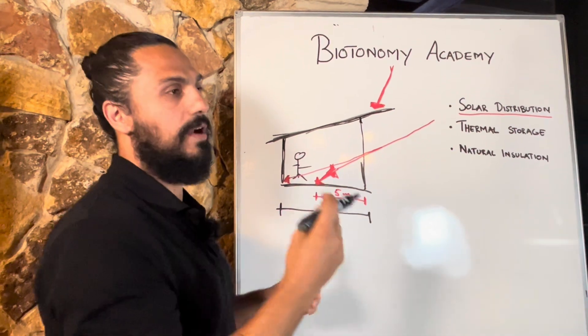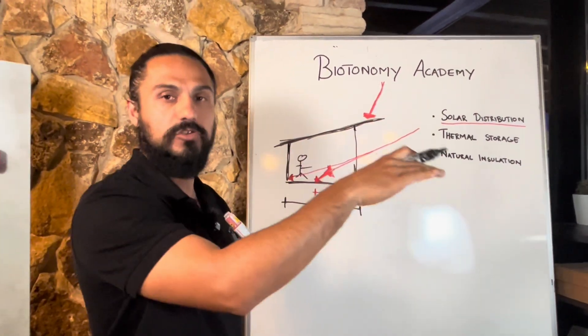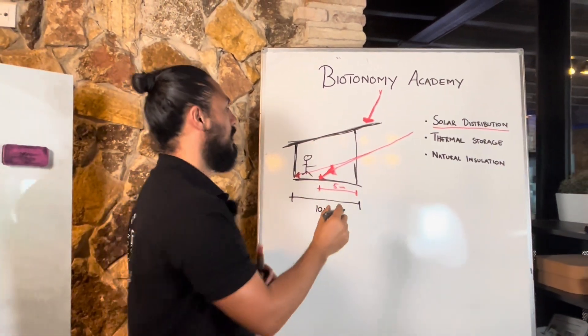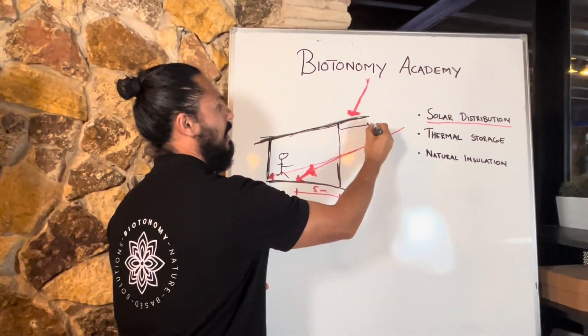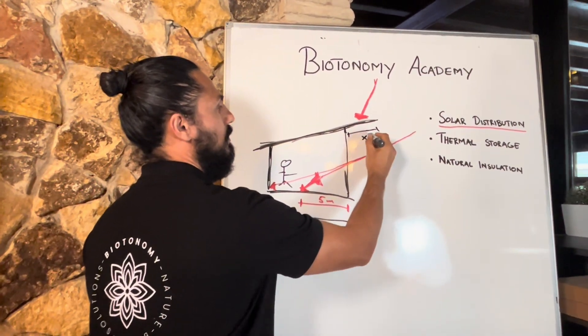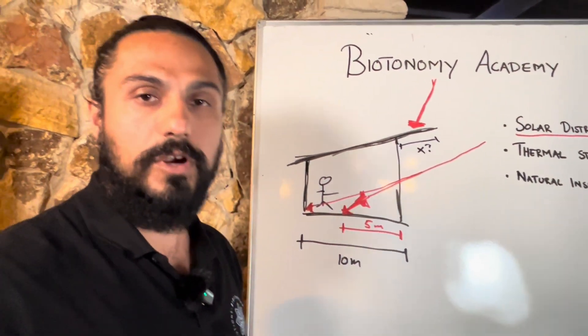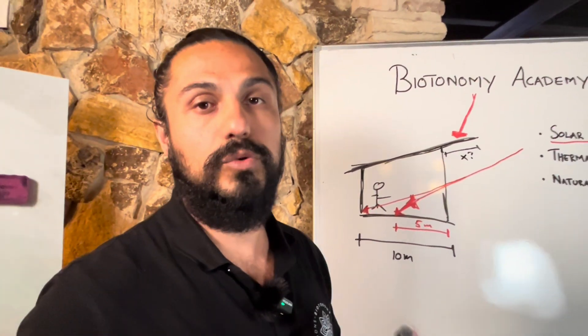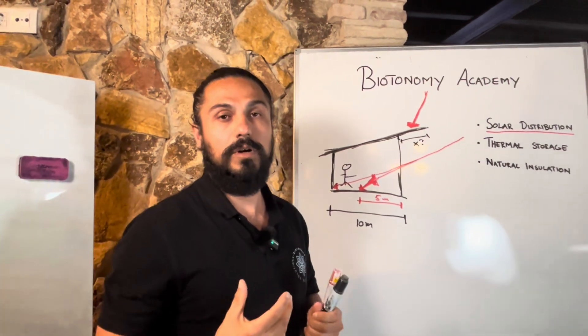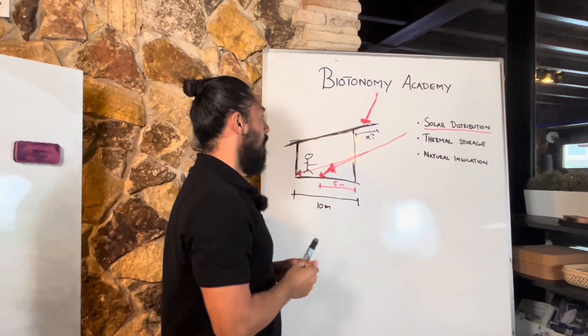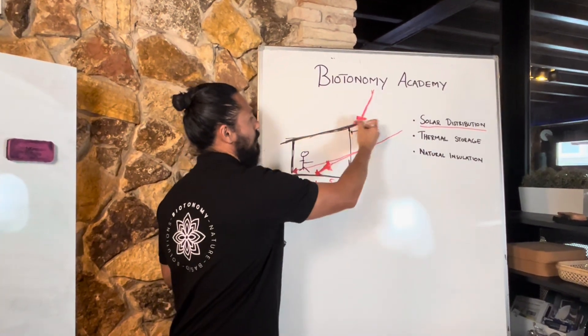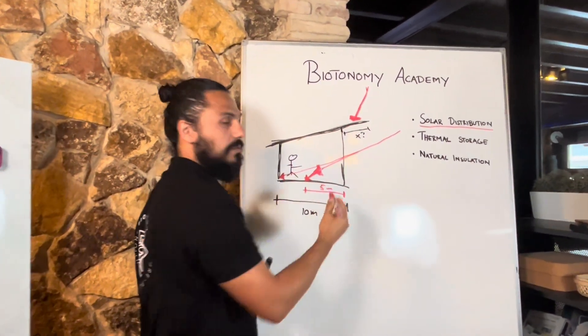Now the question is, an overhang means when the roof hangs over your wall. Now the question is how long should my overhang be? How long should this be? Well the right way to determine that is for you to study your summer angle of the sun. So you make sure your roof overhang would block the sun from coming in.